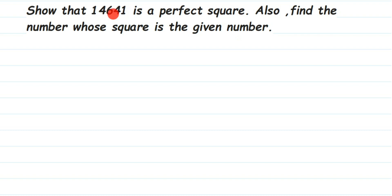That is, what number should multiply to itself to get this number 14,641? To do this, the best way is to do the prime factorization. Using this, we can find out the square root of the number and also we can check if the given number is a perfect square or not.